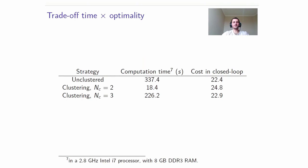To summarize the results of computation time and cost in closed loop, please see the following table. The unclustered strategy has the higher computational cost with more than 300 seconds and the lowest closed loop cost, of course. With two clusters, then we dramatically reduce the computation time to 18 seconds and increase the cost to 24.8. A compromise is achieved with three clusters, where the computation time is between maximum and minimum computation time and the cost is also between them.